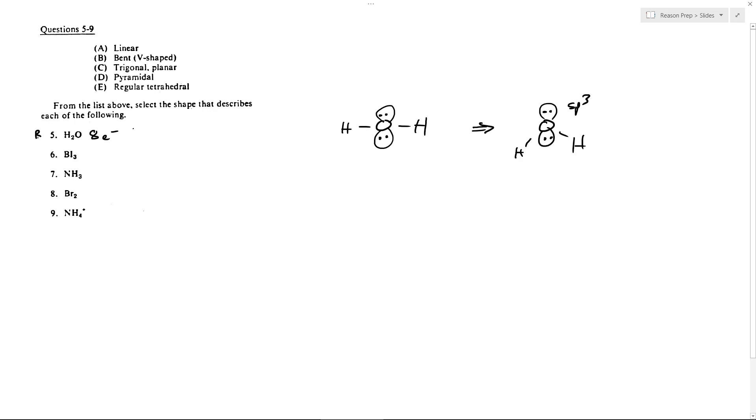For number six, BI3. The boron has three valence electrons, the iodine has seven times three, 21. So 21 plus three, we get 24 electrons for BI3. Now I know where this is going, so I'll draw it like this. Again, it doesn't really matter how we draw this. What's going to matter is what's going on with that boron.